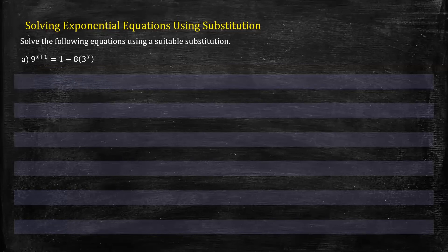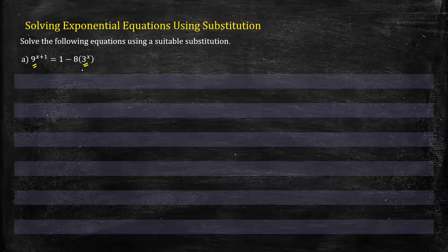In this lesson we'll learn how to solve exponential equations using substitution methods. In this question we have 9 to the power x plus 1 equals 1 minus 8 to the power 3x. We know that on the left side we have 9 to the power x and we have 3x here.